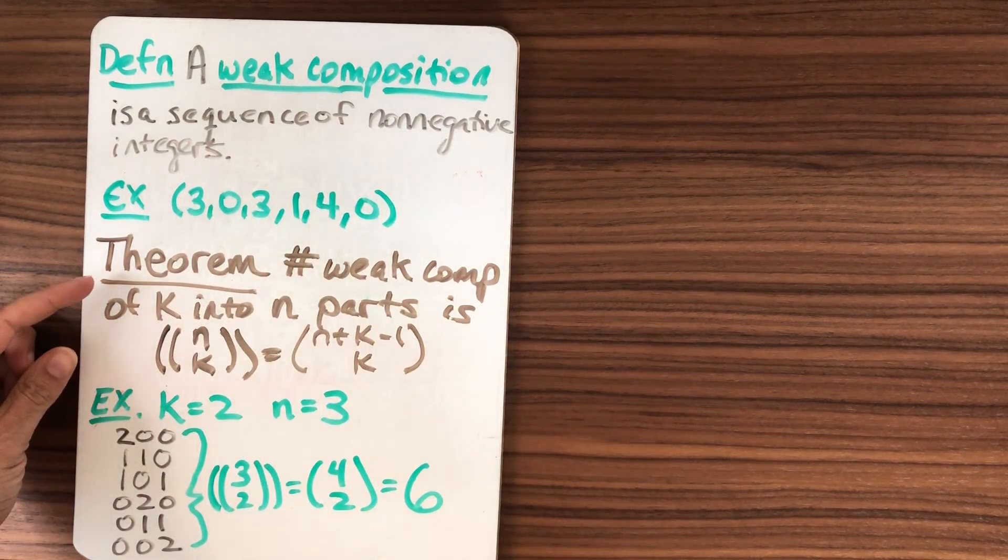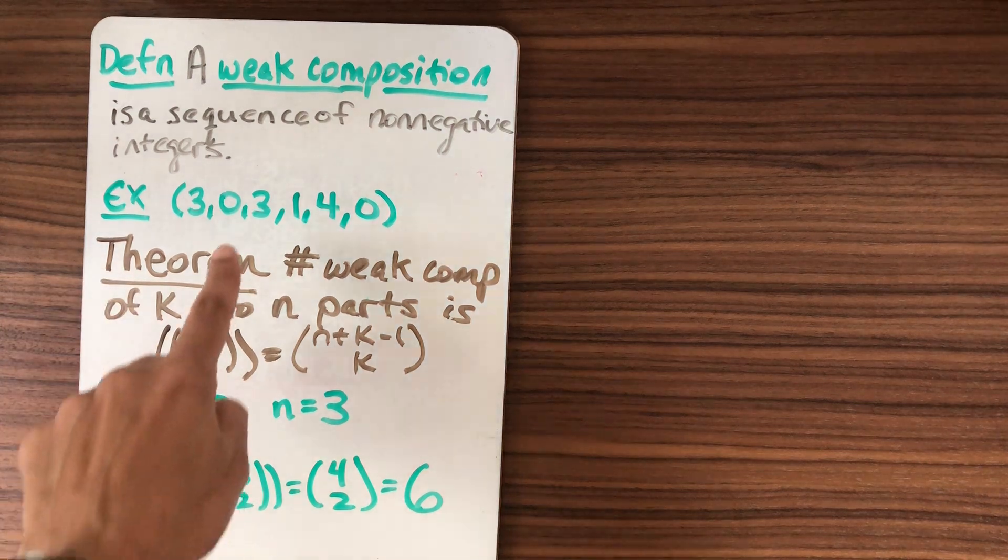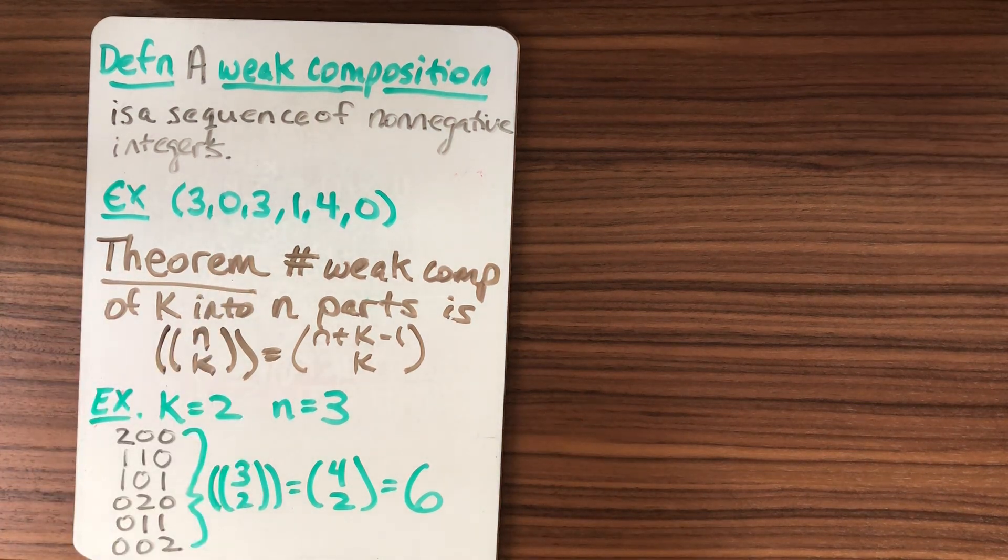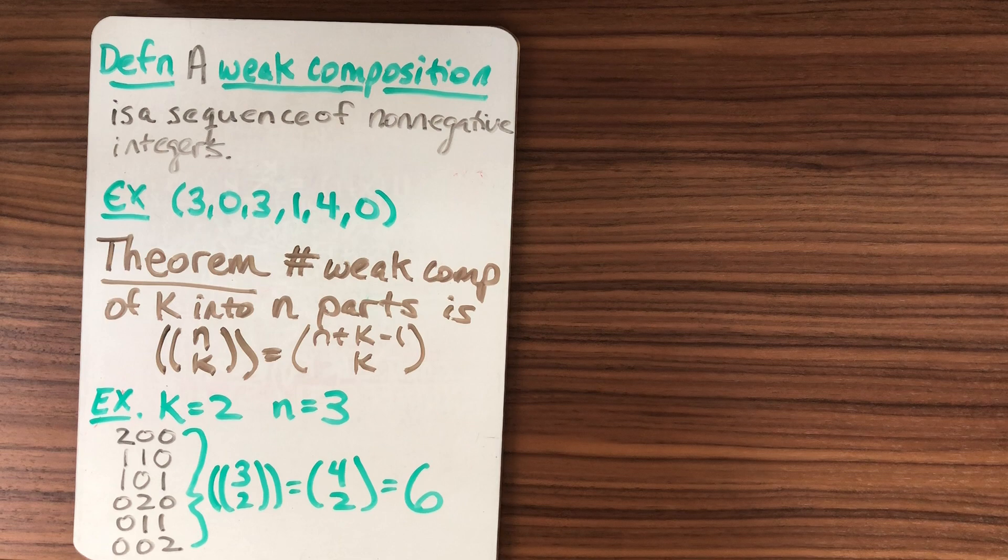And we have this theorem, which is how to count them. But let's think about how to construct them and how to visualize them, because that's going to lead to a lot of interesting combinatorial properties.